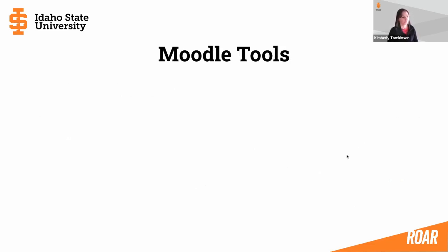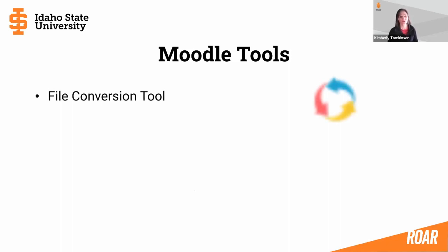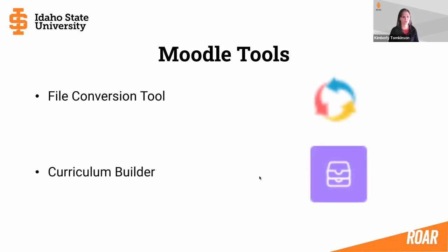Moodle offers tools to support the use of resources in courses. The document conversion tool, represented by a circle of three colored arrows, allows students to convert a file to their preferred format — for example, converting a text file to audio. The curriculum builder is a Moodle tool for collecting library resources so students can access them directly from the library. Reach out to ITRC staff to learn more about either of these tools.